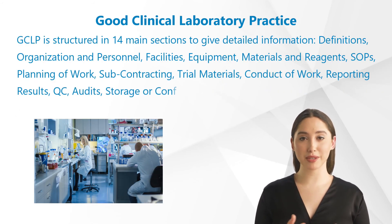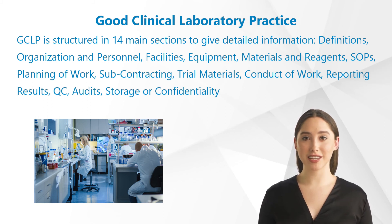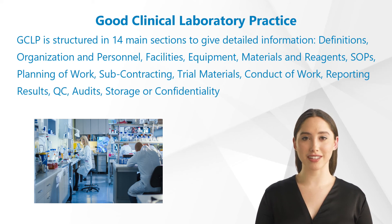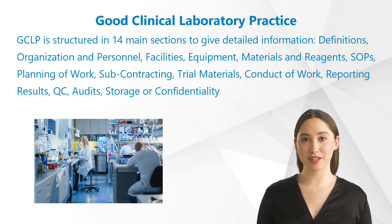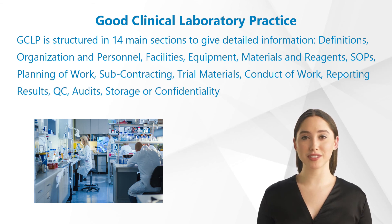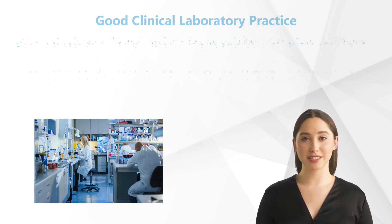GCLP is structured in 14 main sections to give detailed information on every task, like definitions, organization and personnel, facilities, equipment, materials and reagents, SOPs, planning of work, subcontracting, trial materials, conduct of work, reporting results, QC, audits, and storage or confidentiality.